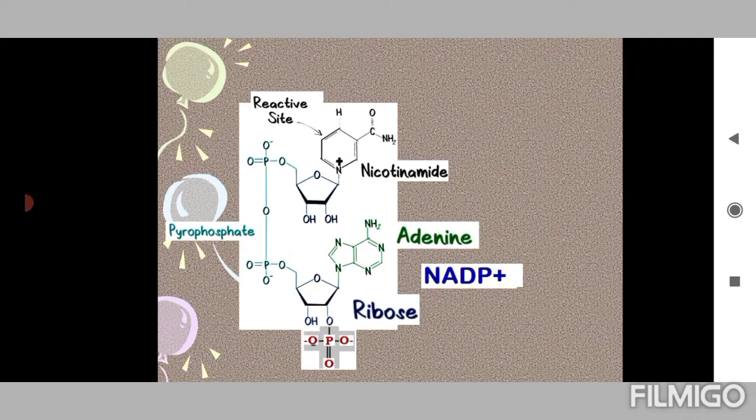During oxidation of substrate, the nicotinamide ring of NADP plus accepts a hydrogen ion and two electrons, which are equivalent to a hydride ion.